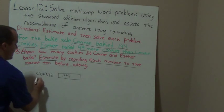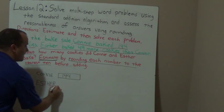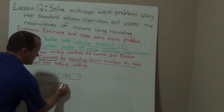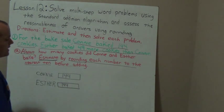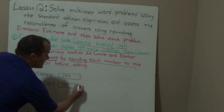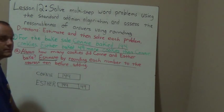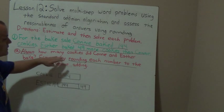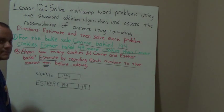Now I'm going to draw a tape diagram for Esther. Let me write her name here — Esther. It says that Esther baked 49 more cookies than Connie, so that means she baked Connie's cookies plus an additional 49 more. I'm going to draw a piece of tape for Connie's cookies and then add on another piece of tape with 49 in it, because Esther should have a bigger tape diagram than Connie. Now it says to estimate by rounding each number to the nearest 10, so I'm going to round Connie's cookies to the nearest 10.